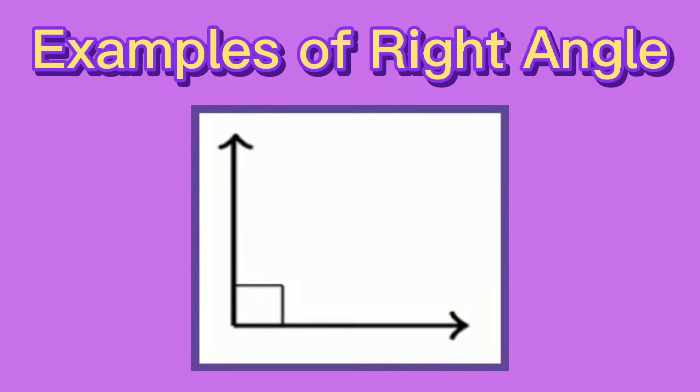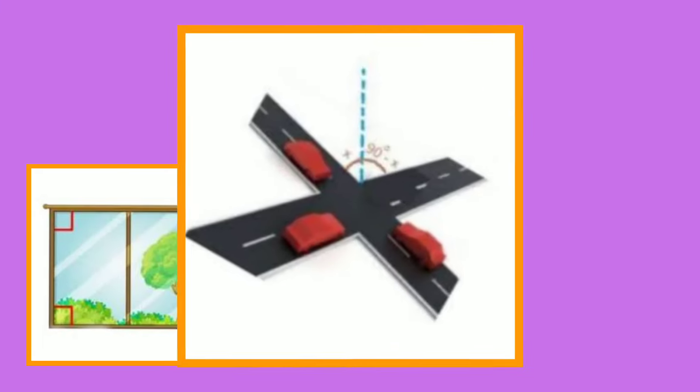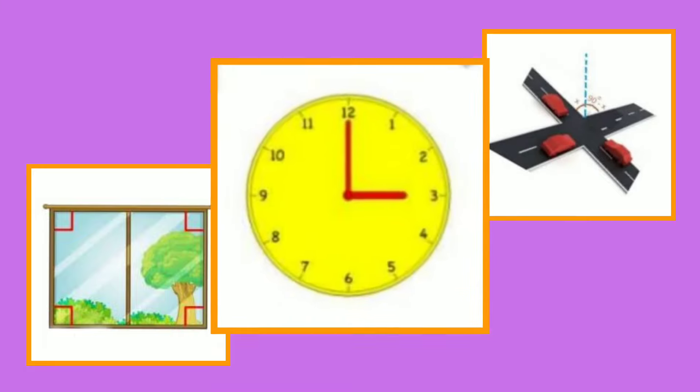Let's have some examples of right angle represented by the following figures. The lines on the window, the crossroads, and the hands of a clock.